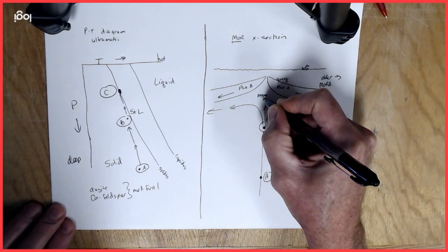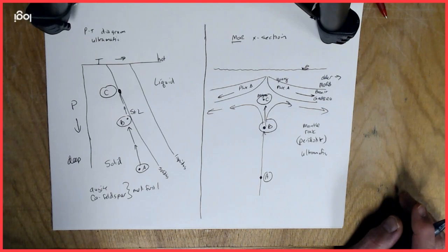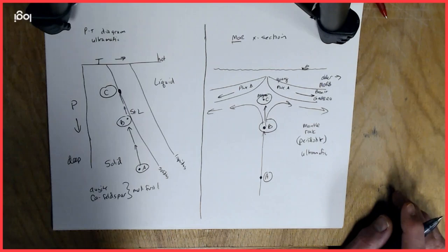At point C, it might be somewhere right about in here. Pretty shallow inside the Earth. It's going to be below the crust. So by that point, it might be 50 kilometers depth or even less than that, maybe actually more like 10 kilometers depth.